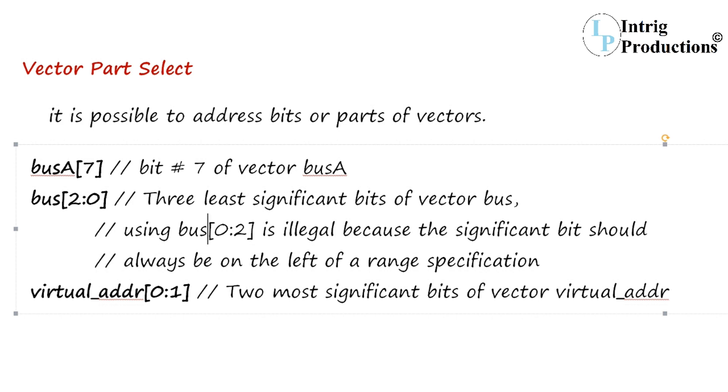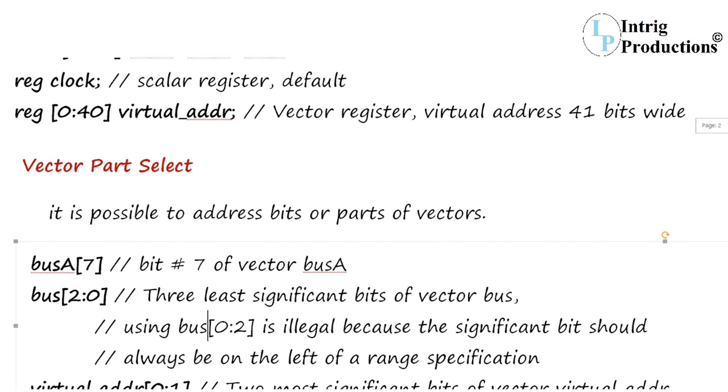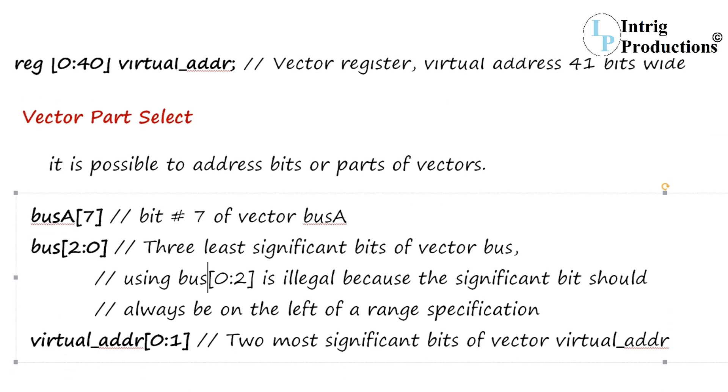Vector part select: it is possible to address bits or parts of vectors. So busA[7] is accessing directly the seventh bit. In order to access for a bus that we discussed previously, a bus variable is only 8 bits of values, but right now I want to access only three bits of values.